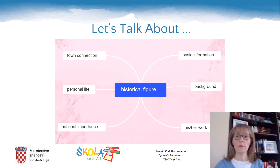Creating a mind map is your starting point — it can help you organize your ideas before you start writing the text. Choose a historical figure and think about their background, work, national or international importance, personal life, and their connection with the town or region you come from. You can check your writing with your virtual classroom teacher. Good luck!